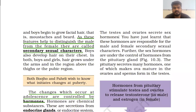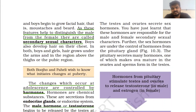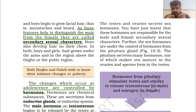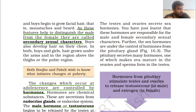The pituitary secretes many hormones, one of which makes ova mature in the ovaries and sperm form in the testes. Ova is the female gamete — it is part of the reproduction process. Sperm is the male gamete. Both male and female gametes meet in the female body during reproduction and form a zygote, and the process continues.